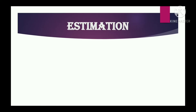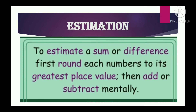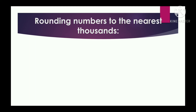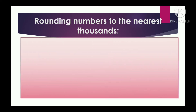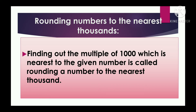Now let's talk about estimation. To estimate a sum or difference, first round each number to its greatest place value, and then add or subtract mentally. To find the estimation we should know how to round off to the nearest tens, hundreds, thousands, and so on. Now we will study rounding off to the nearest thousand: finding the multiple of one thousand nearest to the given number is called rounding to the nearest thousand.